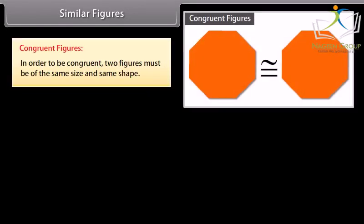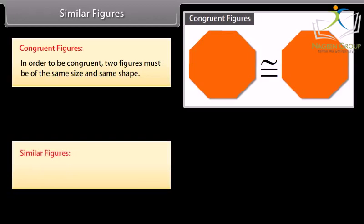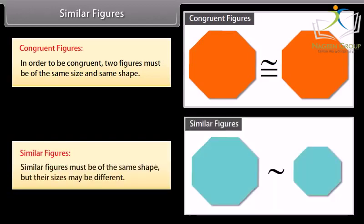Similar figures and congruent figures. In order to be congruent, two figures must be of the same size and same shape. Similar figures must be of the same shape, but their sizes may be different.